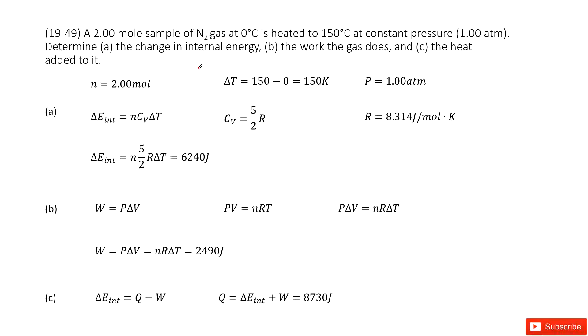We have hydrogen gas. The mole number is given as 2 mol. The temperature changes from 0°C to 150°C, so we can write it as 150K. The constant pressure is 1 atm.